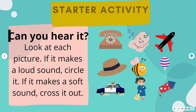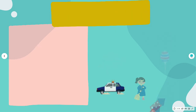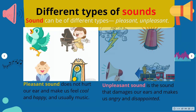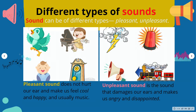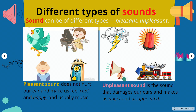Our ears are very important — they help you to hear sounds. Hearing is one of your five senses. There are different types of sound. Sound can be pleasant and unpleasant. Pleasant sound does not hurt your ears; it makes us feel cool and happy. These are some examples, usually music.